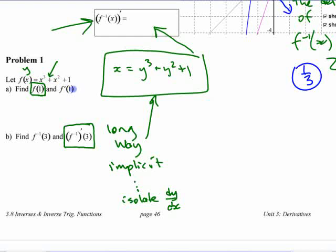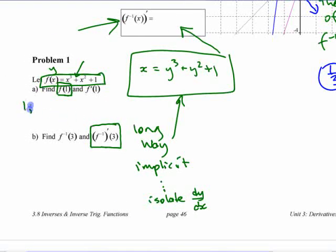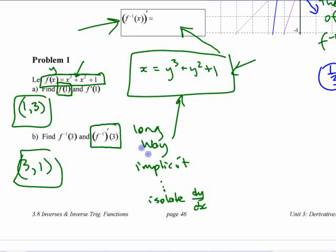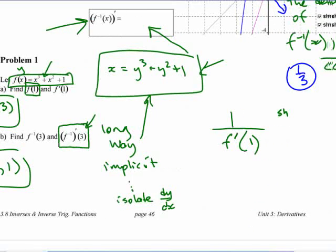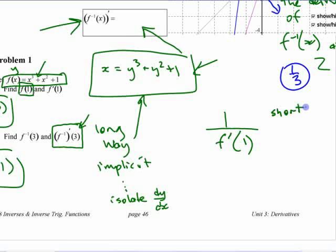The shortcut would be, if we have already done this, because this is a much easier derivative to find, if we know that the point 1, 3 is on the original function, then 3, 1 is on the inverse. 3, 1 should be on this. If we want the derivative at 3, it is going to be 1 over, what's it going to be? 1 over f prime at 1. That's the short way. You don't necessarily need the shortcut, but it's one of the things that's in here and that you can...